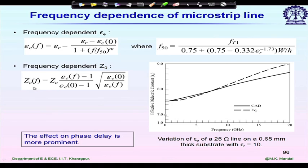Characteristic impedance Z0 almost remains constant with frequency, but the propagation constant β becomes a function of frequency because εe varies. If we don't account for the accurate value of εe, the calculated β or λg will have errors and the corresponding line lengths will need correction. The variation of Z0 with frequency is not as significant as εe, so in most cases we simply neglect the variation of Z0.